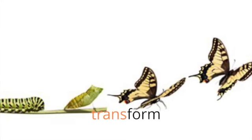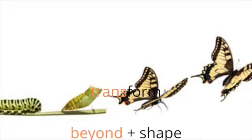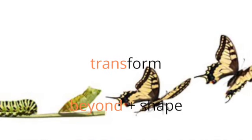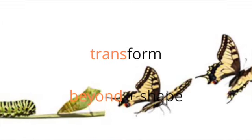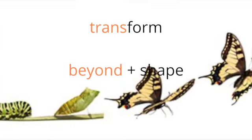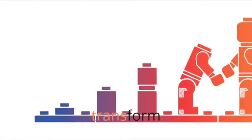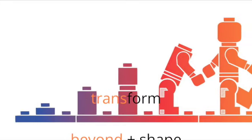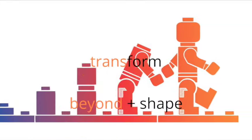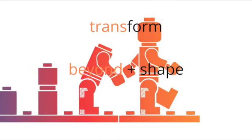Another example is transform. Trans means beyond, and form means shape. You saw a caterpillar transform into a butterfly. Here's another example of transform — this is a Lego transforming from one piece to the next into a Lego guy.